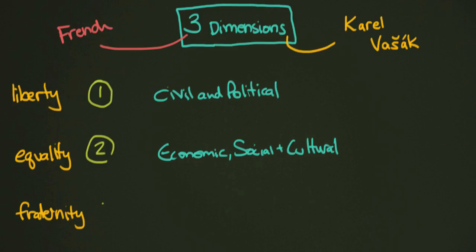And the third dimension, they are simply called collective rights. So what does each of these mean?